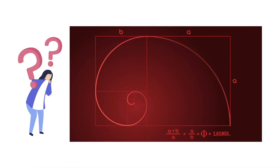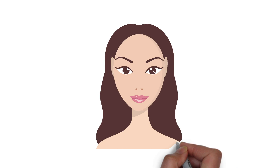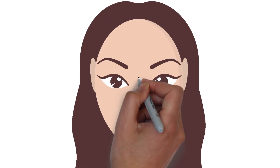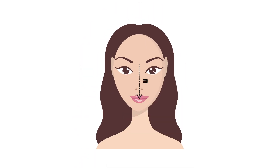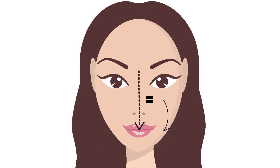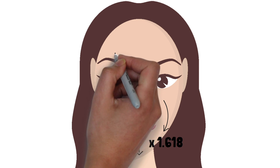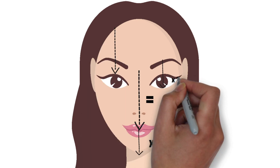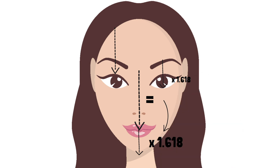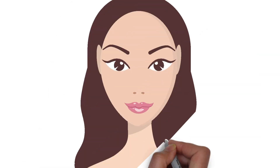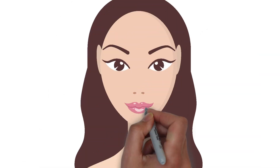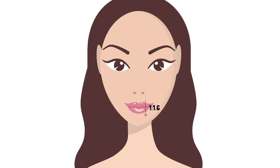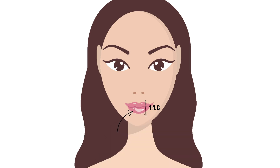To measure ideal face proportions using the golden ratio: the distance from the top of the nose to the center of the lips should be 1.618 times the distance from the center of the lips to the chin. The hairline to the upper eyelid should be 1.618 times the length from the top of the upper eyebrow to the lower eyelid. The ideal ratio of upper to lower lip volume is 1 to 1.6, with the lower lip having slightly more volume.